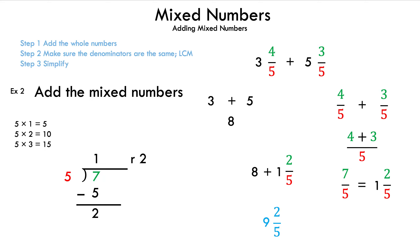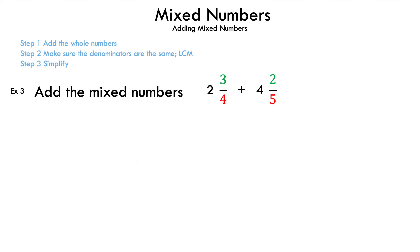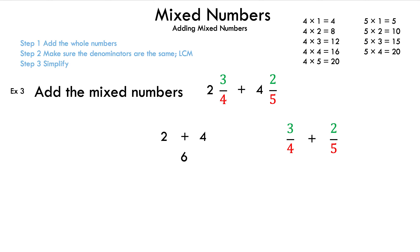Now let's take a look at example 3, where we have 2 and 3/4 plus 4 and 2/5. This time we have different denominators, but we begin with the same process by adding the whole numbers 2 plus 4, and the result is 6. Now we write down the fractions 3/4 and 2/5, and we're going to use the LCM, or least common multiple, to find our common denominator. We write down the multiples of 4 and 5, find one that they both share, and that is 20.